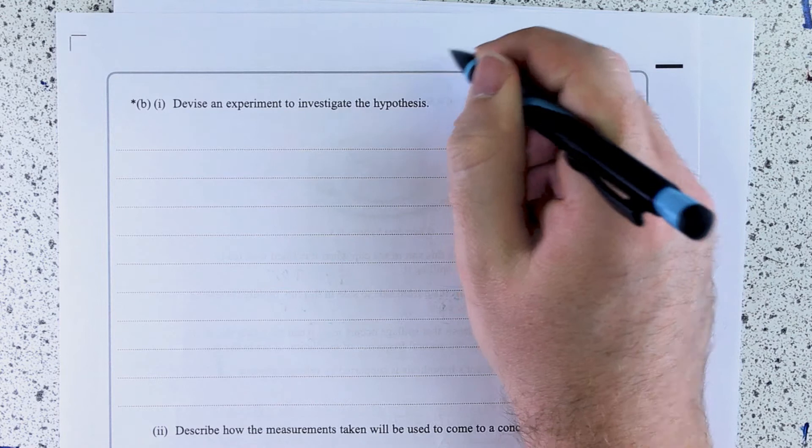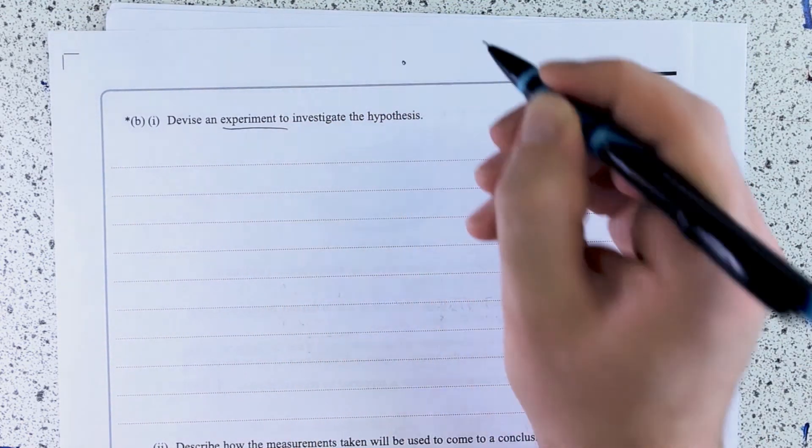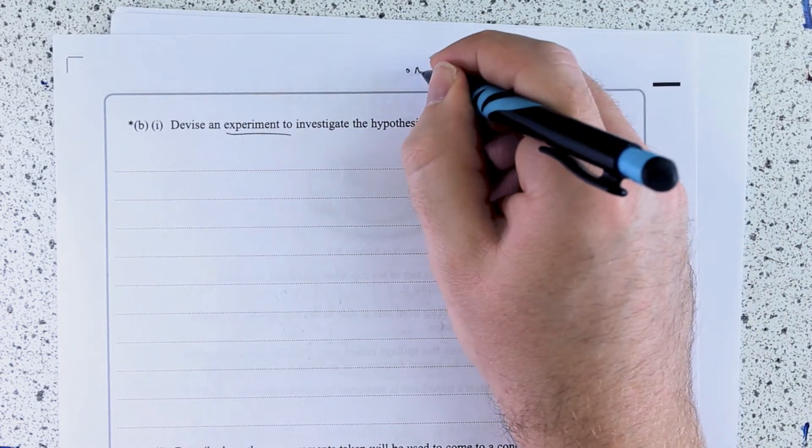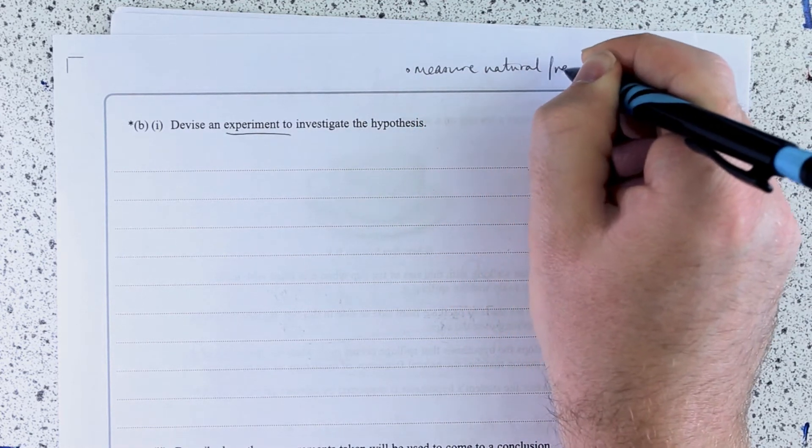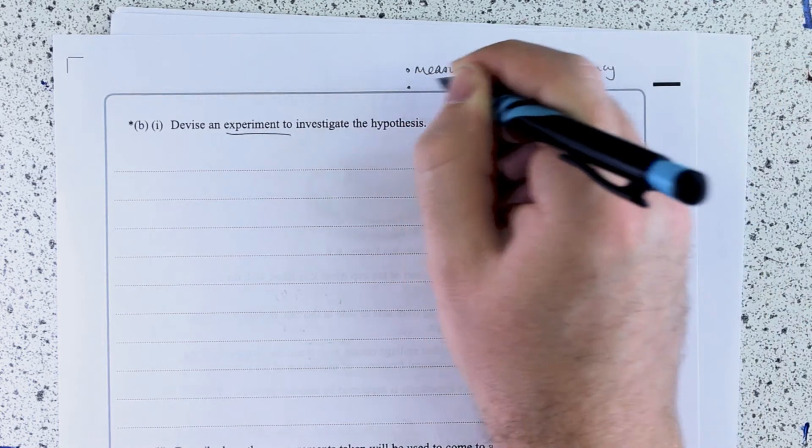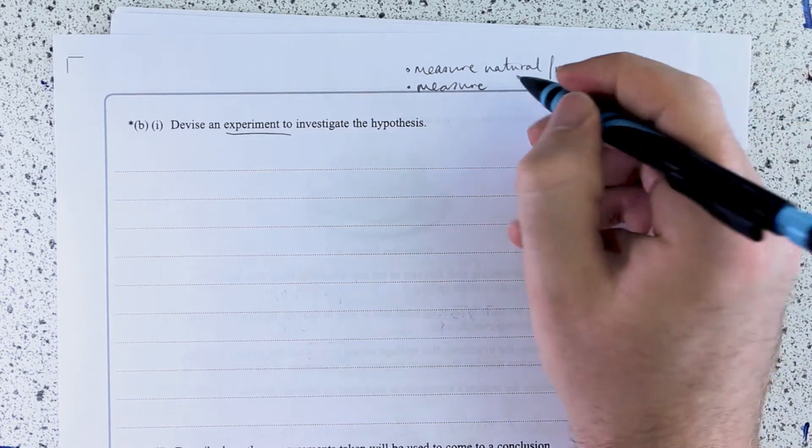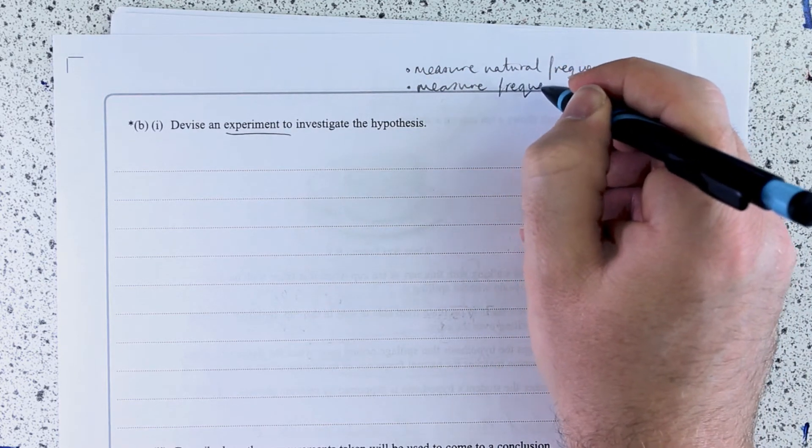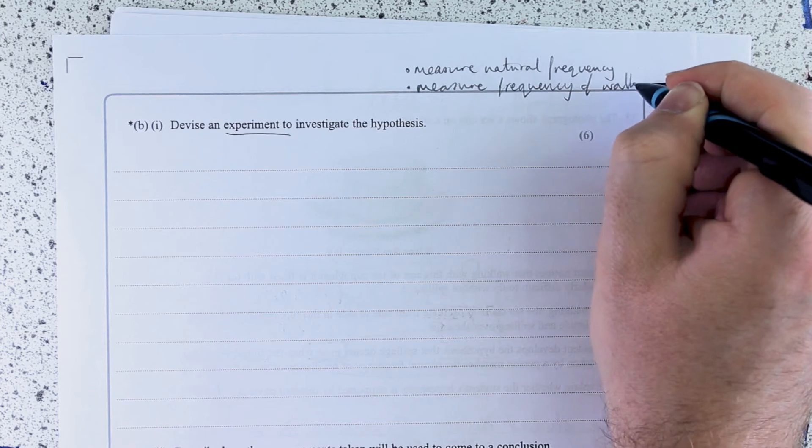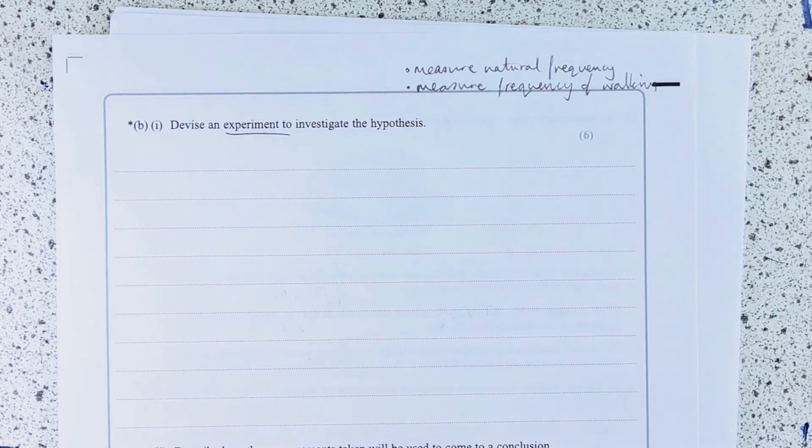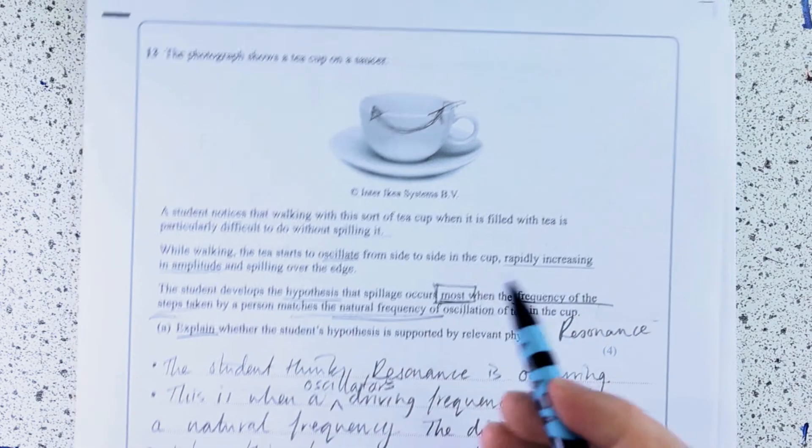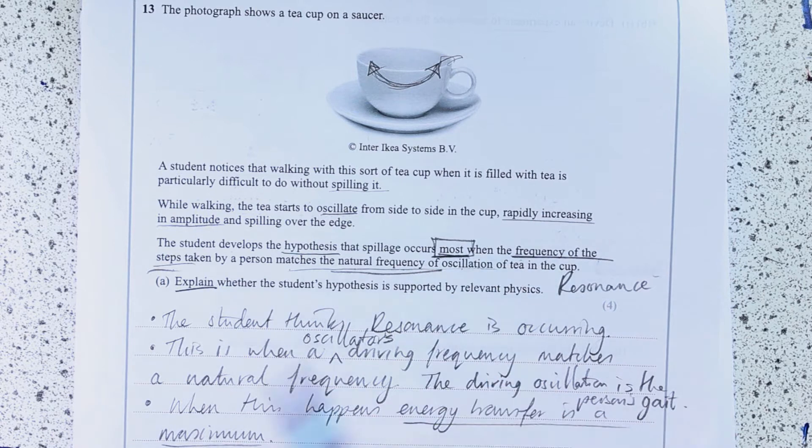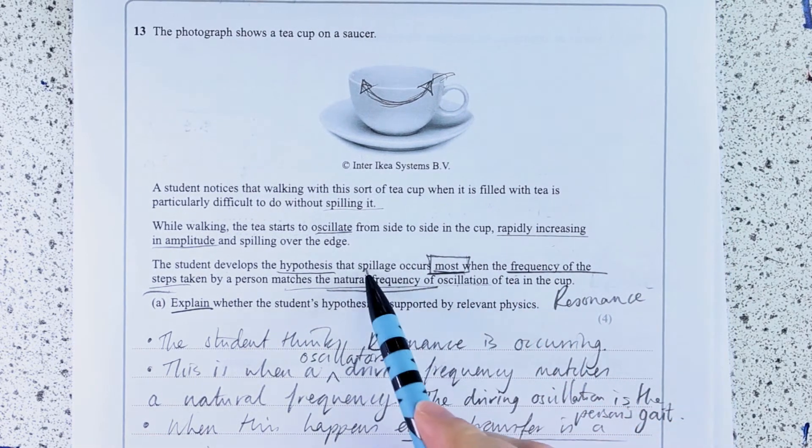So my plan is going to include, if I'm asked to do an experiment, I'm thinking what am I going to measure and how I'm going to measure it. Measure natural frequency. Measure frequency of walking. And he thinks that he's getting most spillage. So I think I'm going to talk about measuring the spillage.